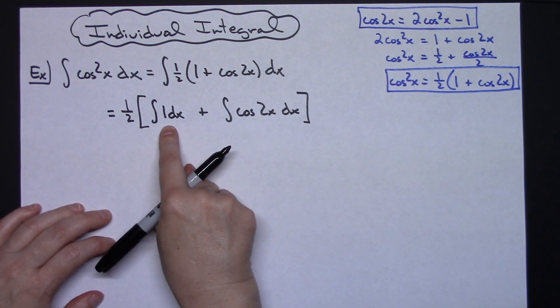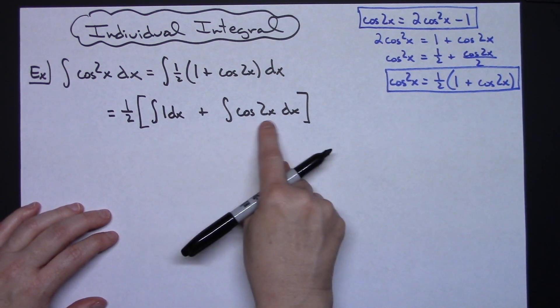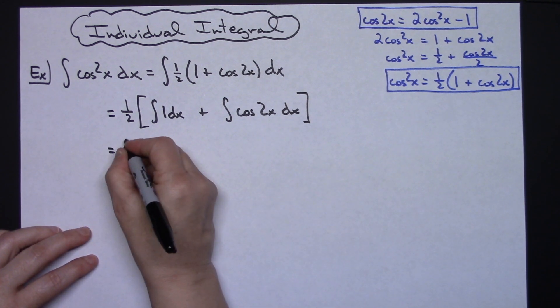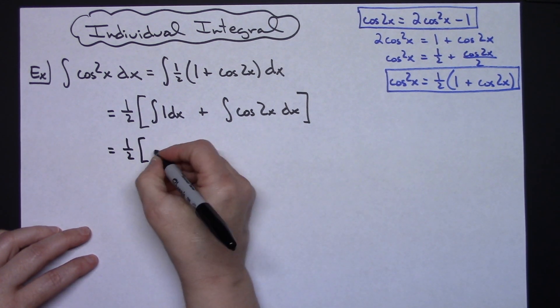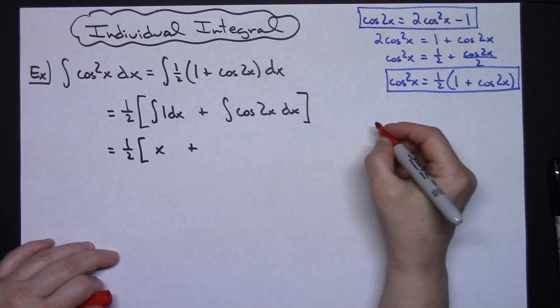Now this is going to integrate straightforward. Integrating a 1 with a dx there is just going to give me an x. This is going to be a straight u substitution. So we'll have 1 half times the quantity of x plus, let's go ahead and show that u substitution.